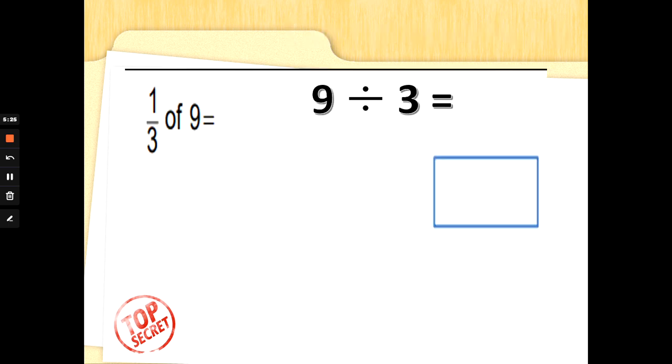So, if we wanted to find 1/3 of 9, or 9 divided by 3, if you knew how to count in 3's, you could start with no fingers up and say 3, 6, 9, and get the answer 3.